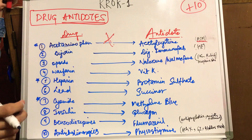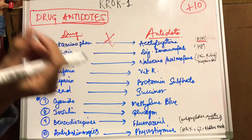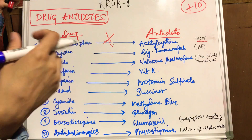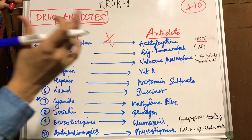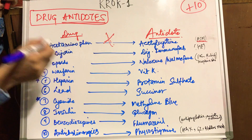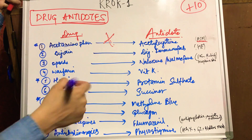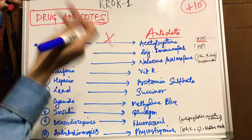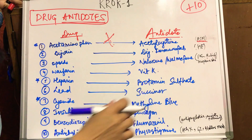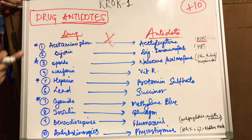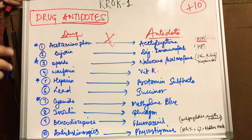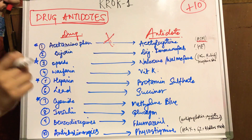The third one is opioids. The function of opioids is mainly as a pain reliever — they have effects like morphine. The antidote for opioids is naloxone or nalbuphine. The ones marked with stars are very important — you need to remember the antidotes for these drugs.